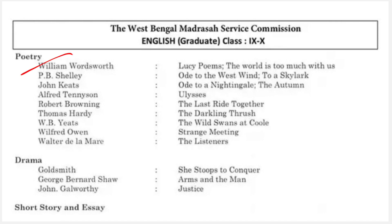In the poetry section, we have William Wordsworth — two poems: the Lucy Poems and 'The World Is Too Much with Us.' The Lucy Poems are not a single poem but a collection of five poems. Next we have P.B. Shelley — 'Ode to the West Wind' and 'To a Skylark,' both of which are odes.